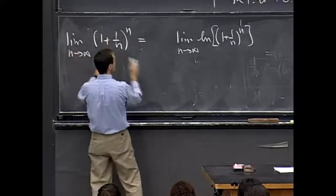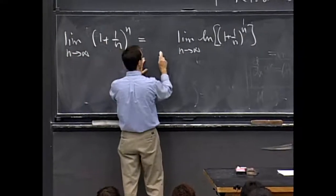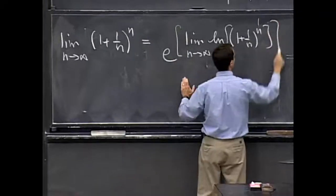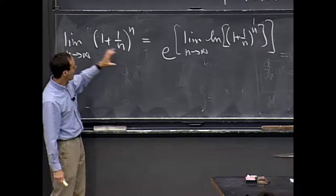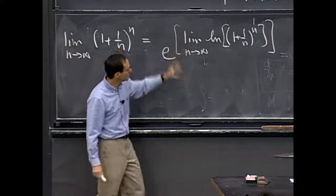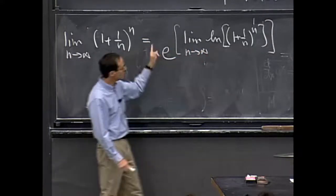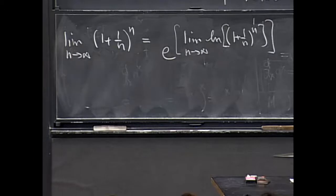But now this thing is the exponential of that. So it's really e to this power here. So this guy is the same as the limit of the log of the limit of this thing, which is the same as the log of the limit. The limit of the log and the log of the limit are the same. Log lim equals lim log.